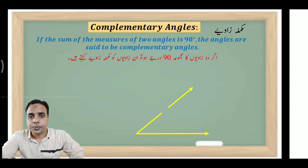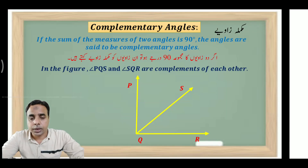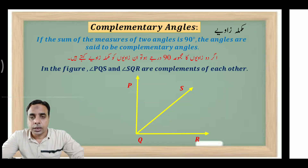Is figure ka observation karte hain. Is figure mein aap dekh rahe hain — in the figure, angle PQS and angle SQR are complements of each other. Zawiyya PQS aur zawiyya SQR ek doosre ke mukammala zawiyya hain. Is tarah se aap dekh sakte hain yahan par ek zawiyya hai PQR — yeh ek qaima zawiyya hai.